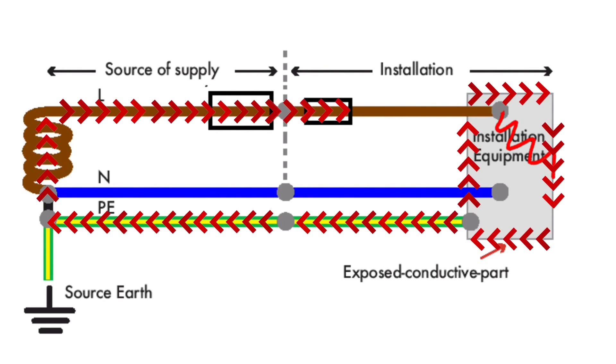The fuse that will operate is the one closest to the fault. In this case the fuse located within the consumers unit will operate clearing the fault in circuit.